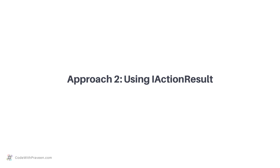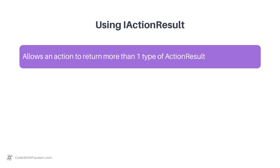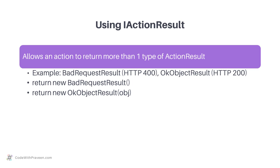The second approach involves the usage of IActionResult, which allows an action to return more than one type of action result. An instance of action result is used to represent the result of an action, be it a successful HTTP result such as the 200 status code series, or failure HTTP results such as the 400 status code series. In this approach, you return an instance of action result or a type derived from it. For example, BadRequestResult is a derived type from action result representing HTTP 400, and OKObjectResult represents HTTP 200.